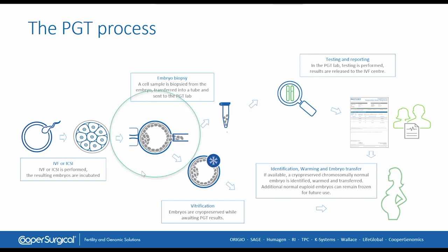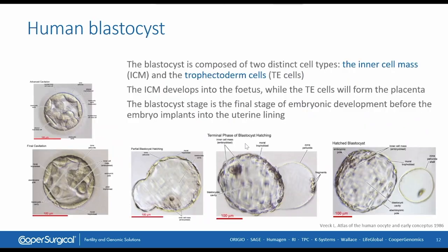Today we are going to focus on the biopsy technique itself. The biopsy technique of blastocysts is mainly focused on taking cells from the trophectoderm. The trophectoderm lines the blastocyst cavity; the inner cell mass will form into the fetus, while the trophectoderm cells will form into the placenta. On day five, we can see different stages of development — a young blastocyst, an expanding, hatching, or completely hatched blastocyst from the zona pellucida.